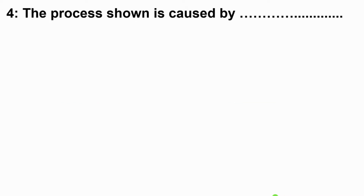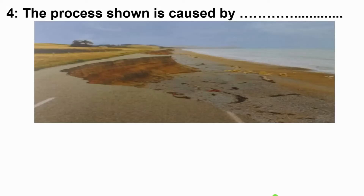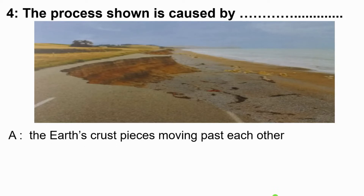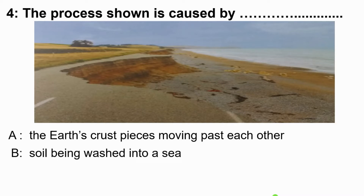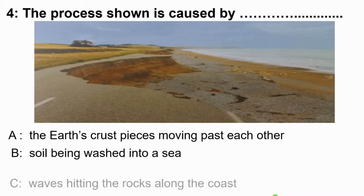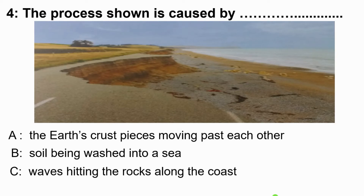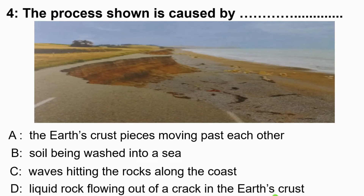Question 4: The process shown is caused by dash. A says the earth crust pieces moving past each other. B says the soil is being washed into the sea. C says the waves hitting the rock along the coast. And D says liquid rock flowing out of the crack in the earth crust. The correct answer is C: waves hitting the rocks along the coast.